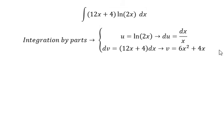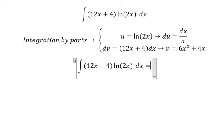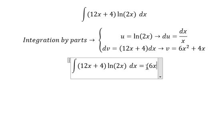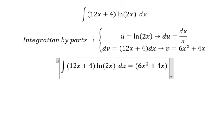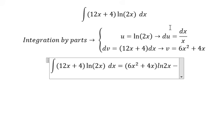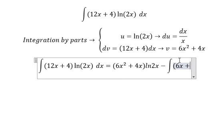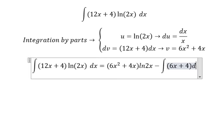So we got u multiplied by v minus the integral of v multiplied with du. We got 6x plus 4 dx.